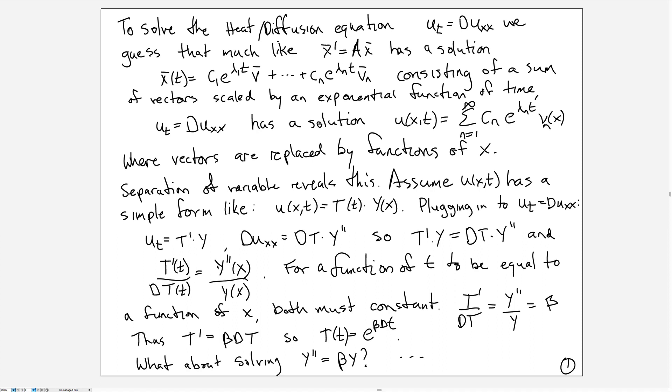In order to solve the heat or diffusion equation, we're going to take advantage of some things we learned from the vector differential equation x' = Ax. Remember the general solution consisted of a sum of terms with structure: an arbitrary constant multiplied by e^(λt), where λ was an eigenvalue of matrix A, multiplied by the associated eigenvector v. Adding up those terms gave us the general solution.